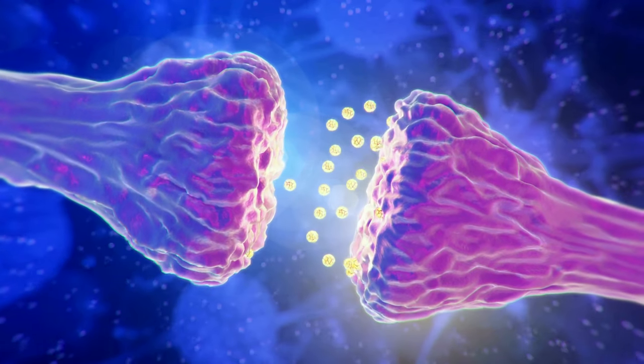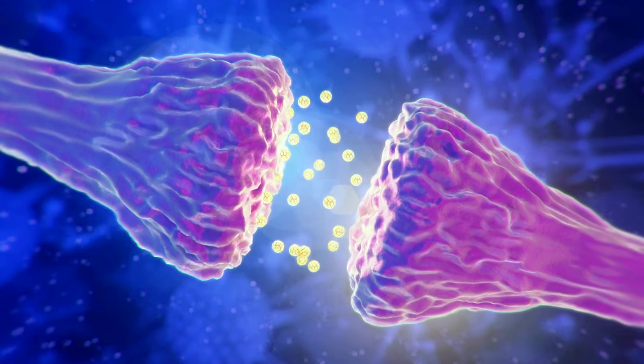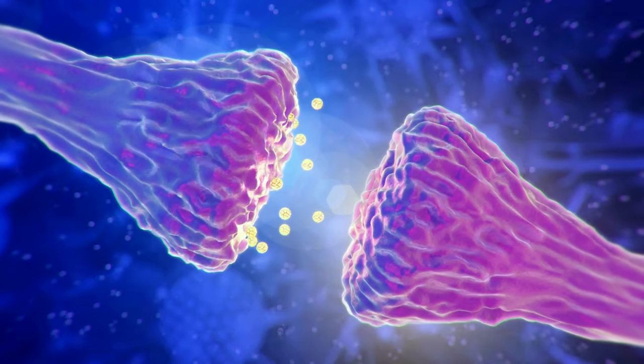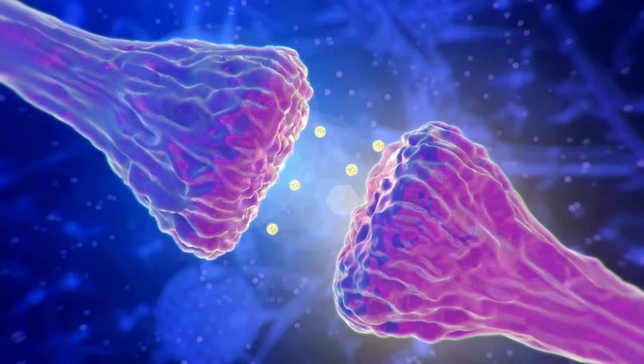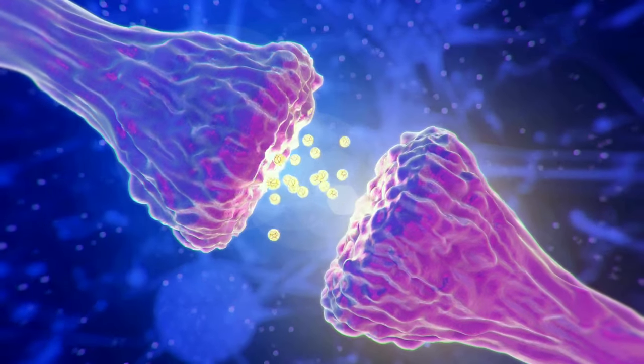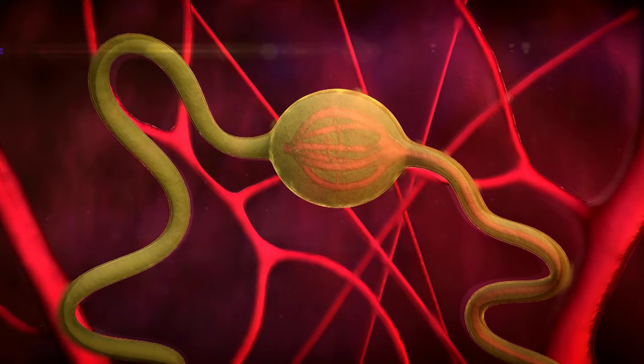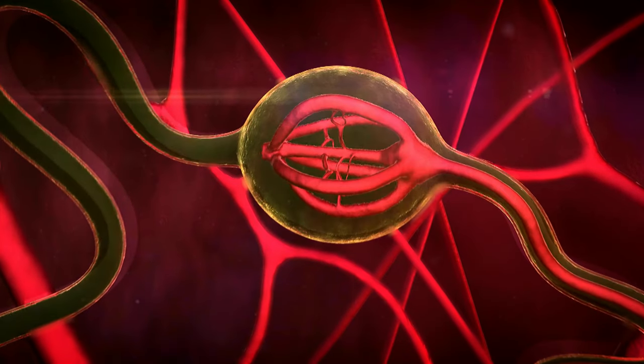Dreaming is another fascinating aspect of the RAS. During REM sleep, the activity in the RAS spikes, making it a crucial player in our dream world. The reticular activating system is truly the brain's control center, playing a role in everything from our sleep to our senses.